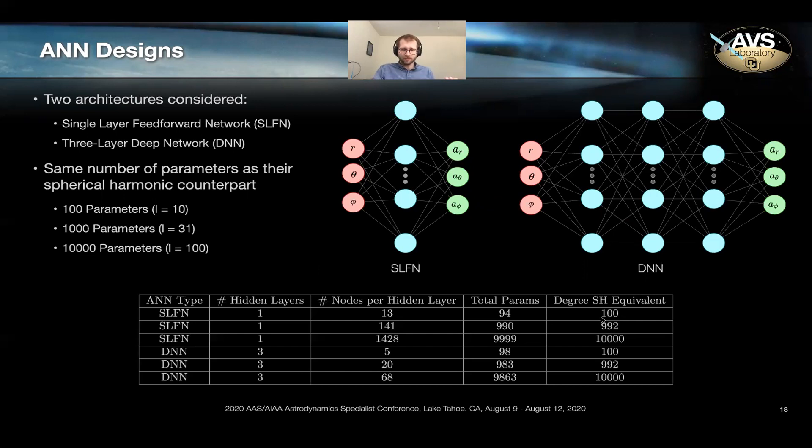So in the case of a spherical harmonic that goes up to a degree and order of 10, there's approximately 100 coefficients. And so we want each of these networks to have about 100 trainable parameters. And what that means is for the single network, we have a width of about 13 in that single layer. And for the deep neural network, we have a width of five. We do similar things for spherical harmonic coefficients models that go up to 1000 coefficients and 10,000 coefficients respectively.